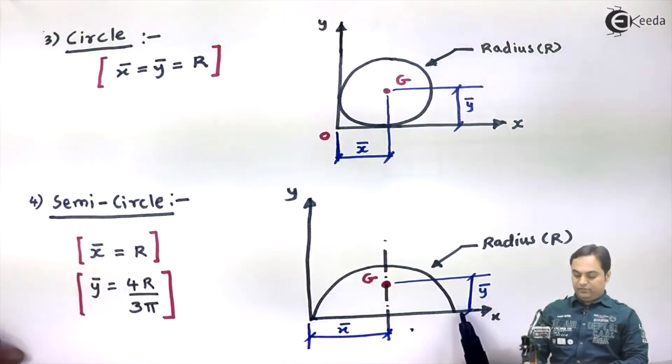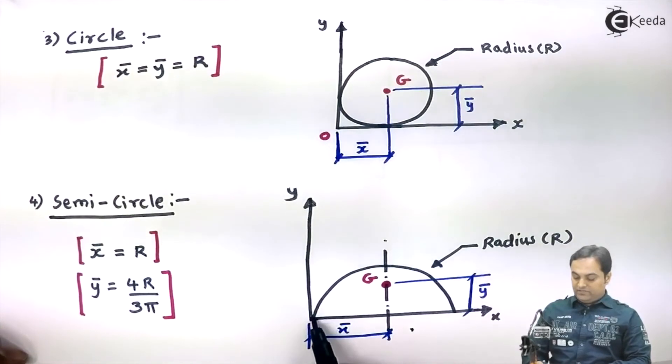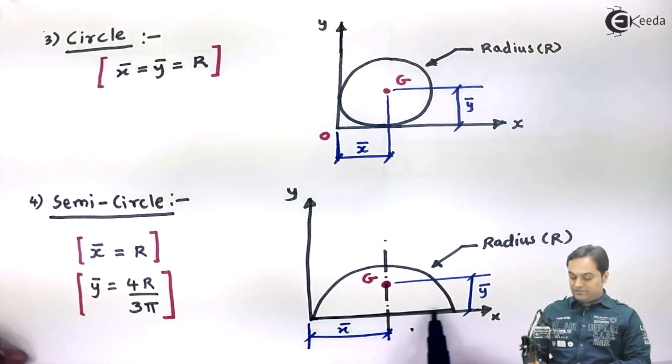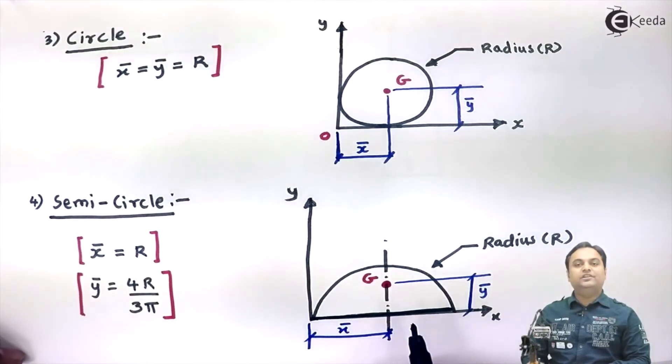And ȳ value is 4R/3π. Remember, this 4R/3π value is with respect to the diameter of the semicircle. You have to be careful because if the position is changed, then the ȳ value will change.